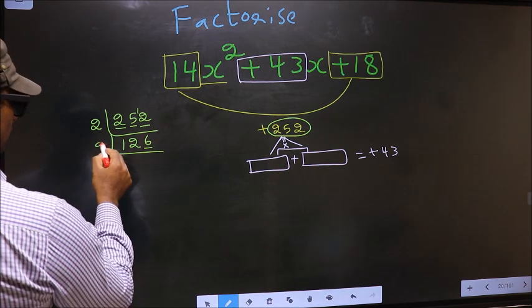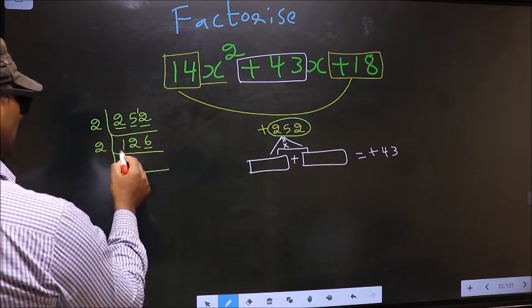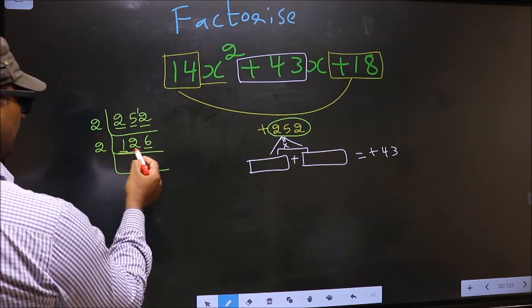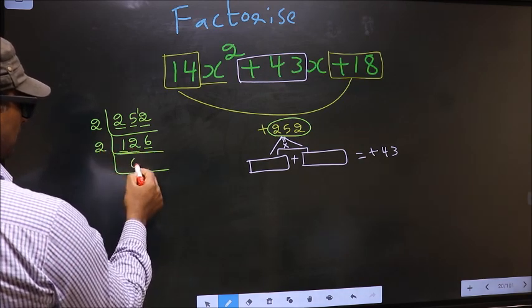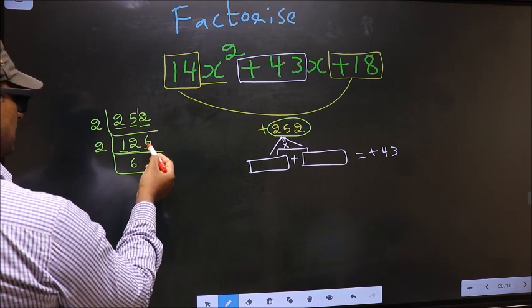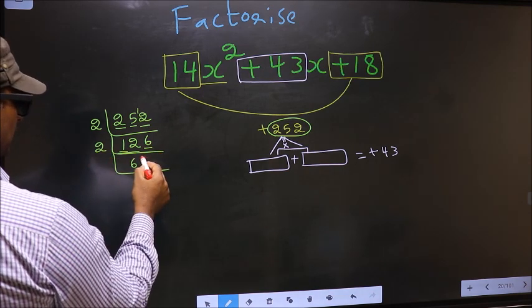Now, here last digit 6, even, so we take 2. First number 1, smaller than 2, so we take 2 numbers, 12. When do we get 12 in 2 table? 2 × 6 is 12. The other number 6, when do we get 6 in 2 table? 2 × 3 is 6.